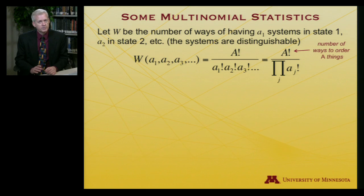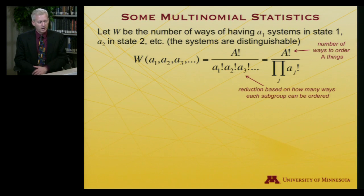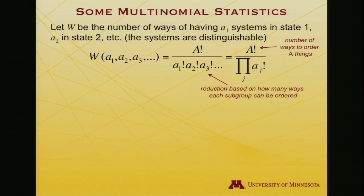But I'm not interested in only how might I order them. I'm going to put them into subclasses. That's what the little a's are: A sub 1 systems in a given state, A sub 2 systems in a second state. And I don't actually care about how they're ordered in their substates. All I cared about was that there was a certain number there. And so I end up dividing A factorial by the number of ways I can organize them in their substates, because I've over counted those possibilities.